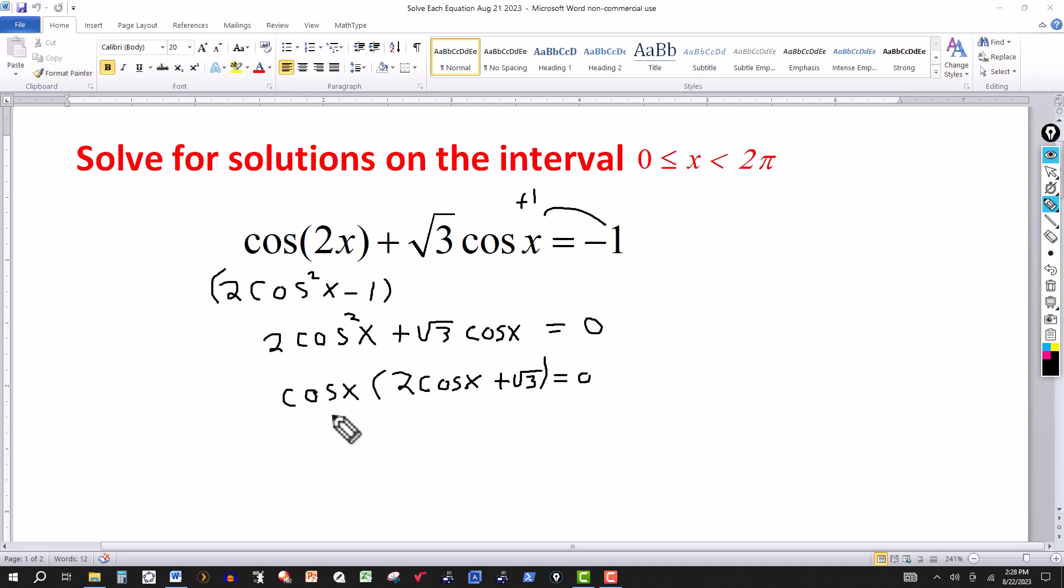And then we just set each factor equal to zero. I have the product of two factors equal to zero. That means either one or both factors are zero. So just like when solving quadratic equations by factoring, we set each factor equal to zero.